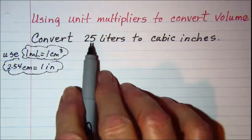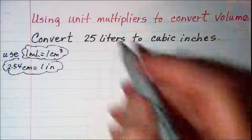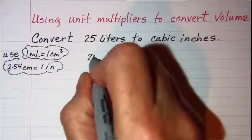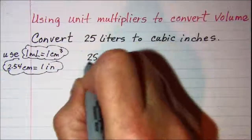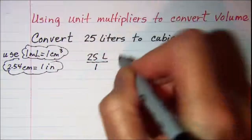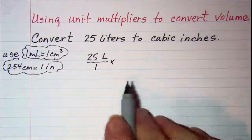So we will start with what we are given, 25 liters. And we are going to write it as a fraction and put it over 1 because then our unit multipliers will be fractions and we will be able to cancel the units.